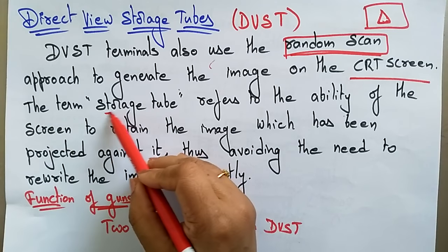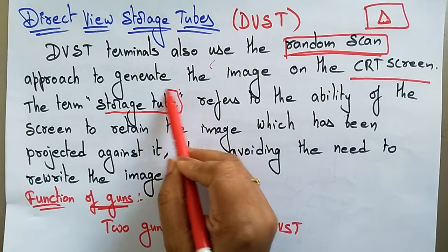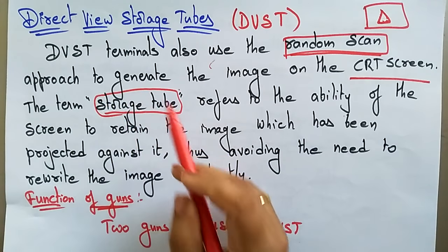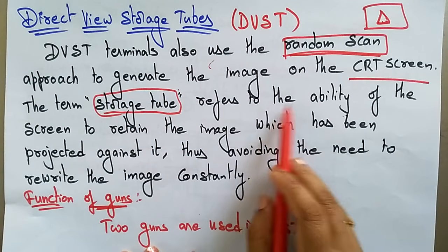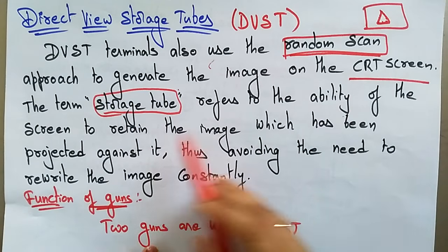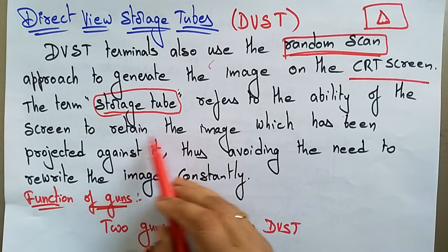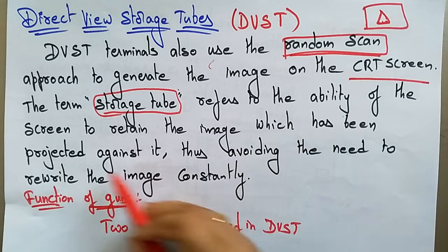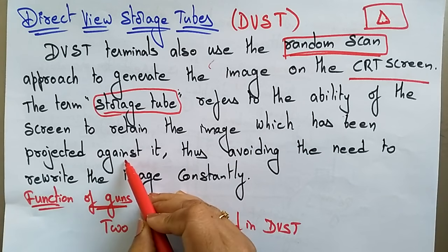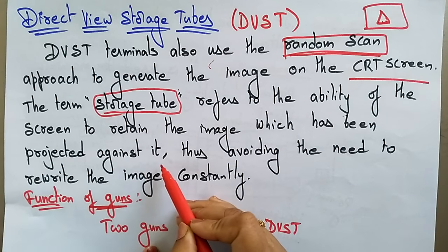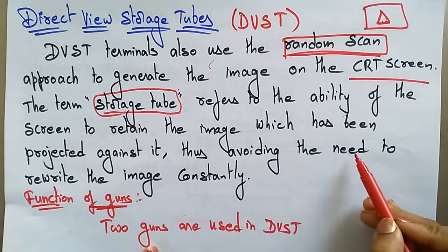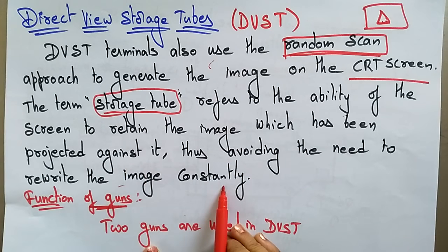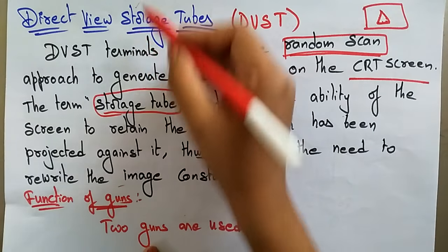DVST terminals also use a random scan approach to generate the image on the CRT screen. The term 'storage tube' refers to the ability of the screen to retain the image which has been projected against it, thus avoiding the need to rewrite the image constantly.